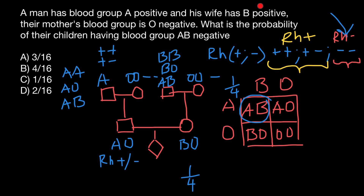The female is B positive, so her RH blood group is RH positive. Her mother is also RH negative, meaning her mother has two defective alleles and can only pass a negative allele to her daughter. Since the daughter is RH positive, she must be heterozygous: plus-minus. This genotype produces the RH positive phenotype.